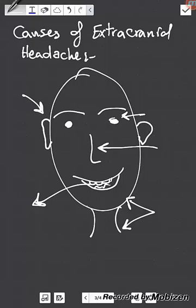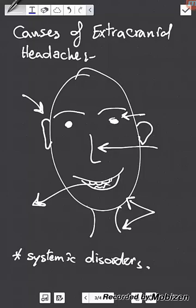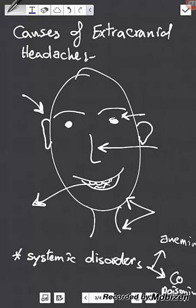Systemic disorders also cause extracranial headache — these are not intracranial, so they are classified as extracranial. Examples include anemia and CO (carbon monoxide) poisoning. Finally, a very common cause of extracranial headache is trigeminal neuralgia. Thank you for listening.